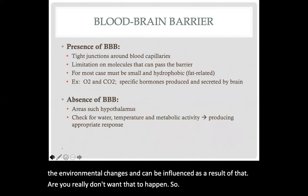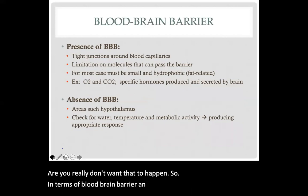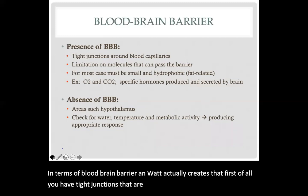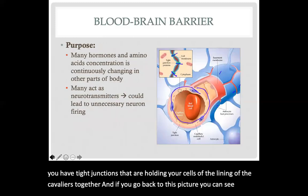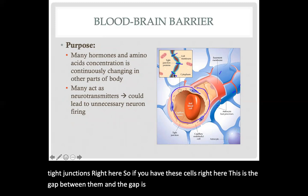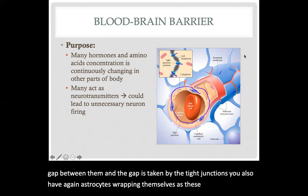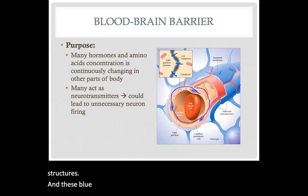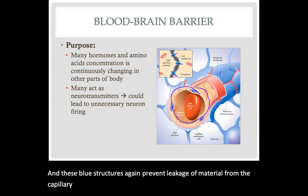So what actually creates the blood-brain barrier? First, you have tight junctions that hold the cells lining the capillaries together. Looking at this picture, you can see these tight junctions right here — that gap between the cells is taken up by tight junctions. You also have astrocytes wrapping themselves around, shown as these blue structures, which prevent leakage of material from the capillary network into your neurons that could possibly cause damage to them.